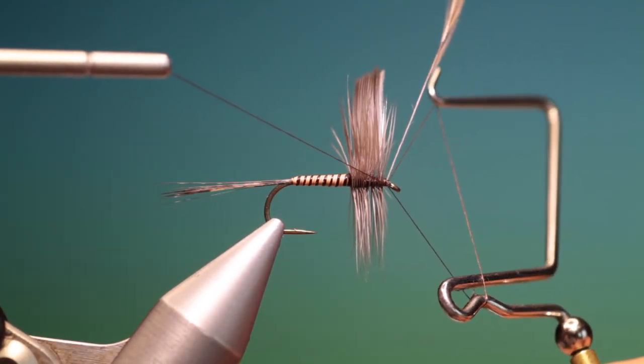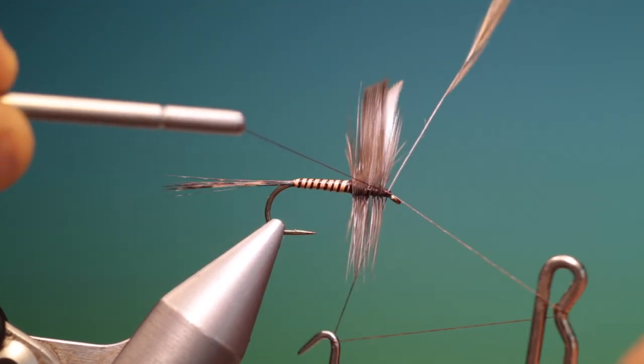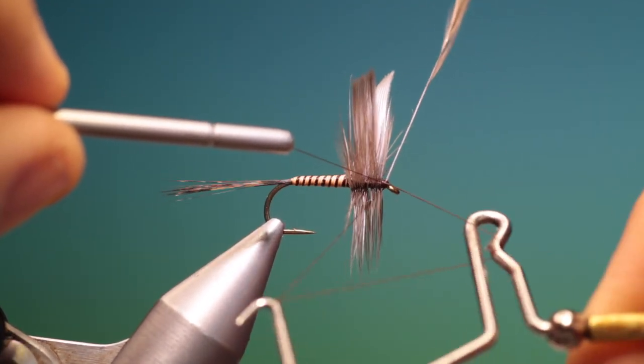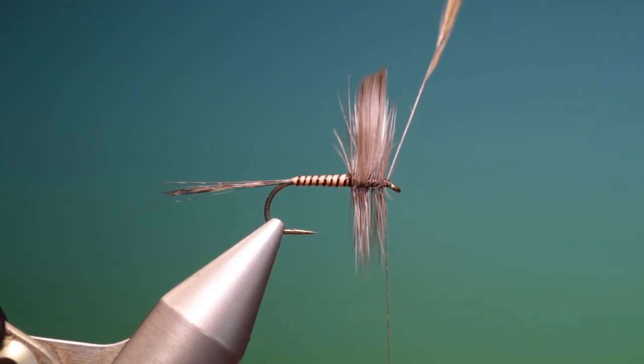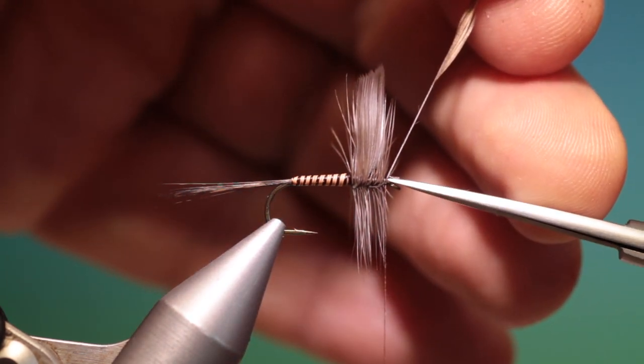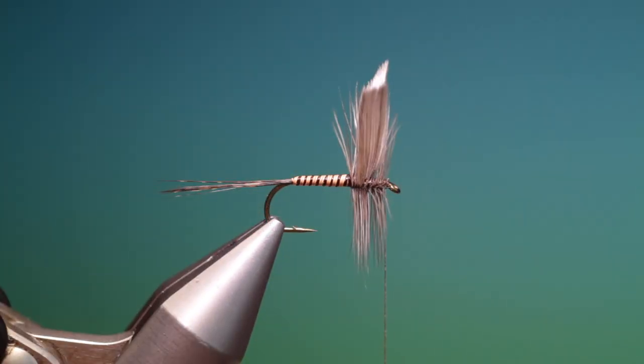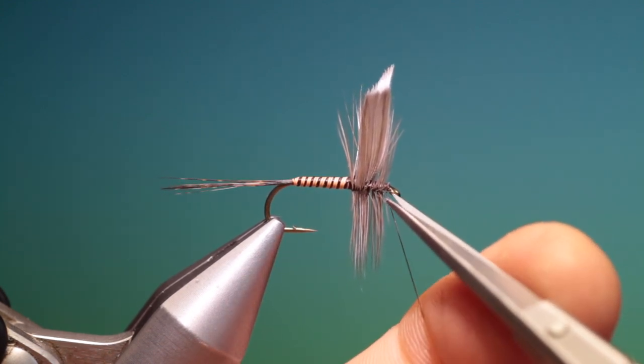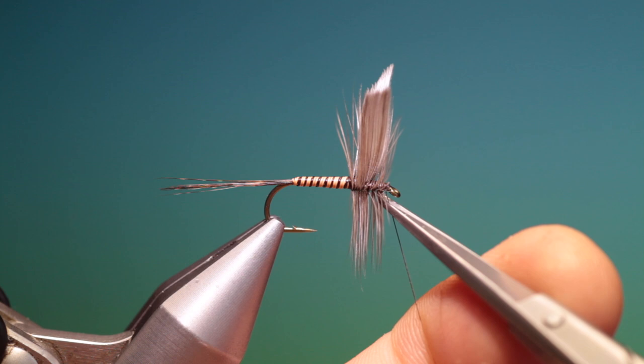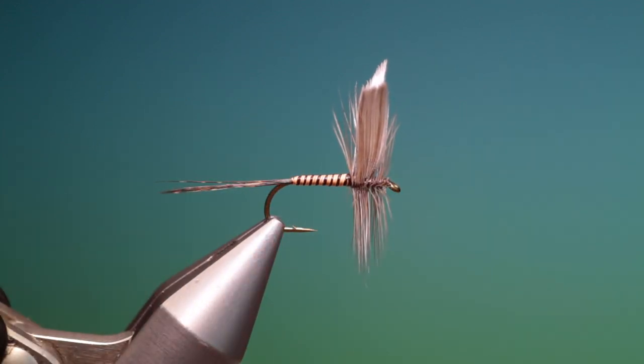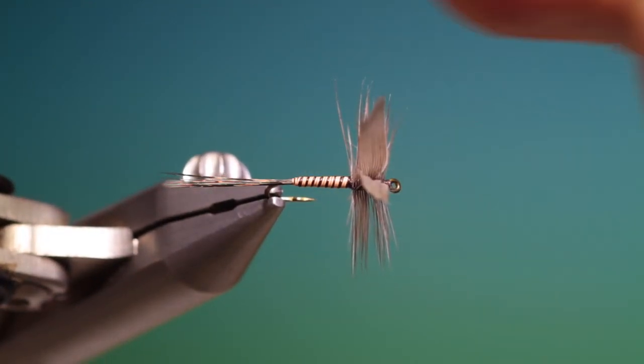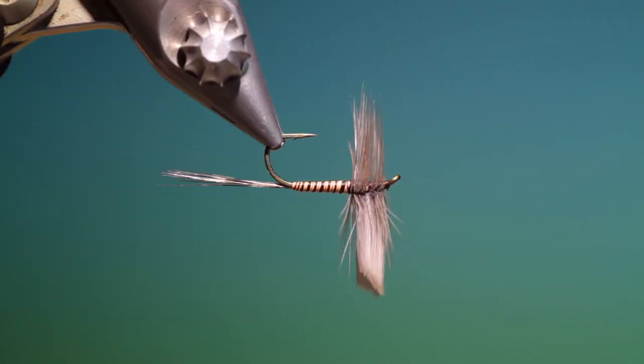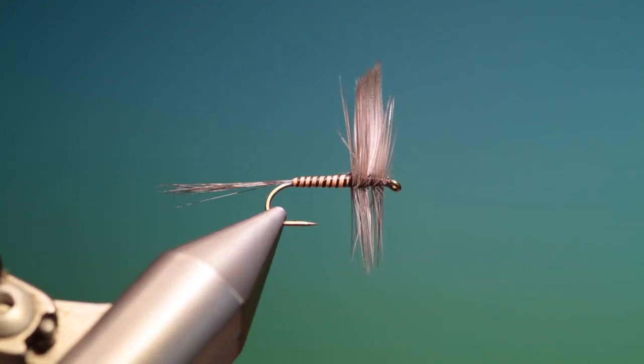With the finisher. Tighten that up. We can remove that. And that. Look at the wings. Those are good. Everything's looking good. And that's the light cahill. With the moose mane body.